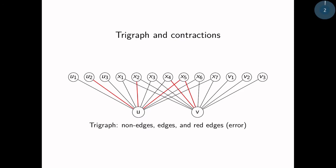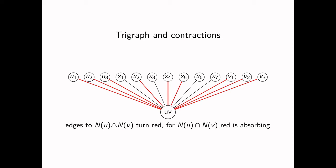For that we need to talk about trigraphs and contractions. A trigraph is simply a graph with two edge sets: black edges, that you can think of as the normal edges, and red edges, that you can think of as the error edges. There you can perform a contraction, or identification, between two vertices that are not necessarily adjacent. So let's do it with u and v. We identify u and v into a single vertex.